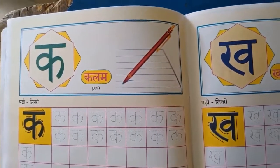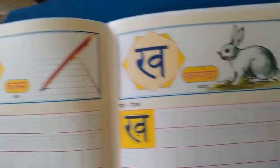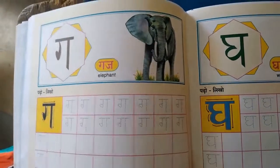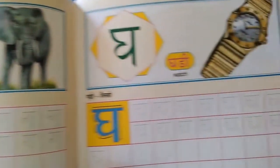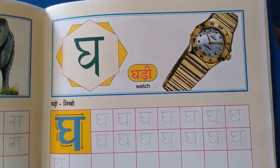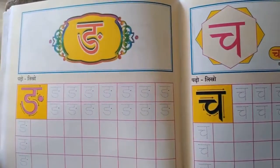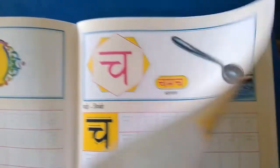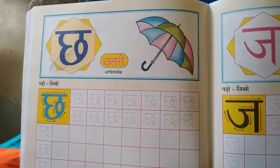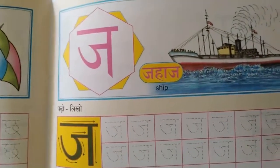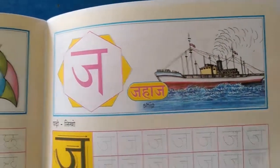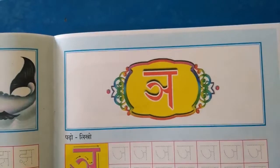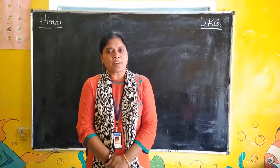Ka se Kalam — pen. Ka se Khargosh — rabbit. Ga se Gaj — elephant. Ga se Ghaadi — watch. Cha se Chambach — spoon. Cha se Chateri — Amralla. Ja se Jahan — ship. Ja se Jash — fish. Illi. Learn this and practice writing weekly.